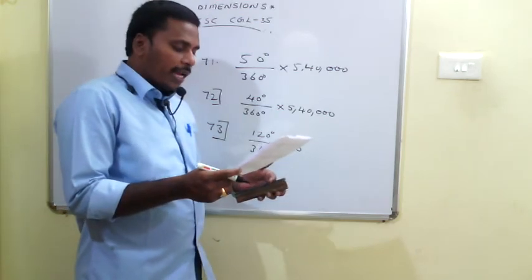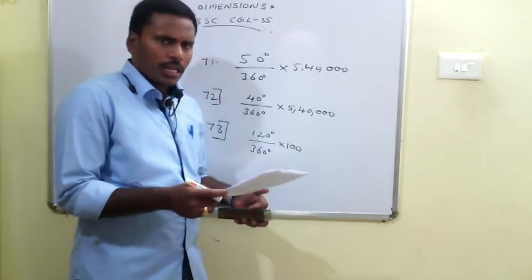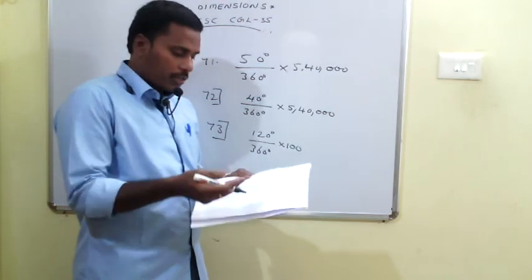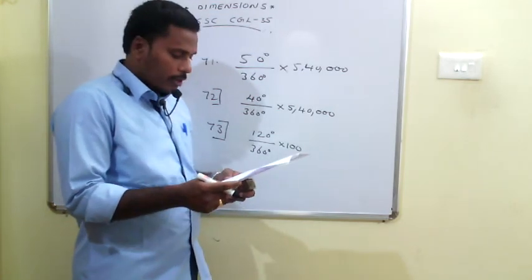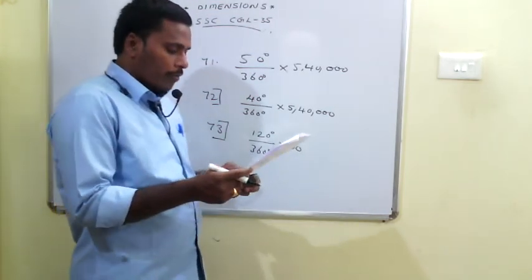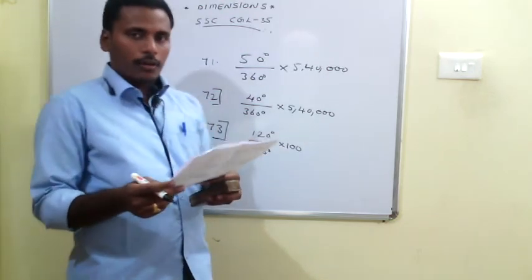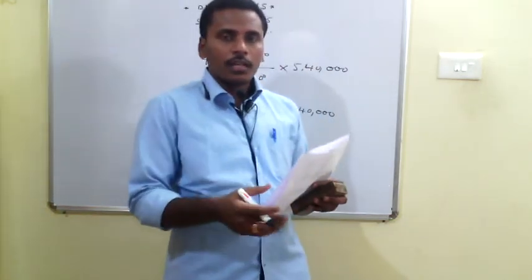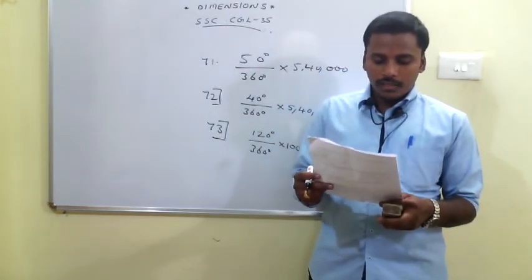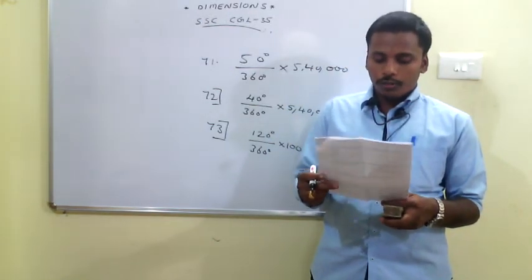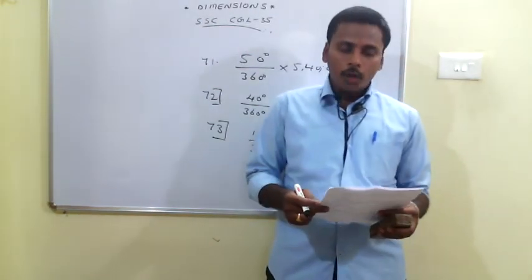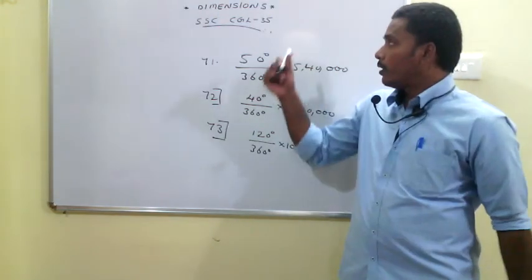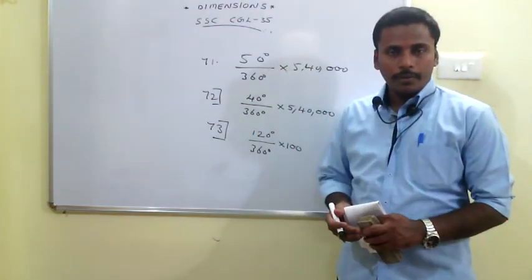The 74th problem: which item has the maximum expenditure? Labour has 100°, the highest among all categories, so labour has the maximum expenditure. The 75th problem: the expenditure on cement = (75/360) × 5,40,000. Calculating gives the answer. This concludes the explanation for the quantitative questions from the CGL 35th paper.